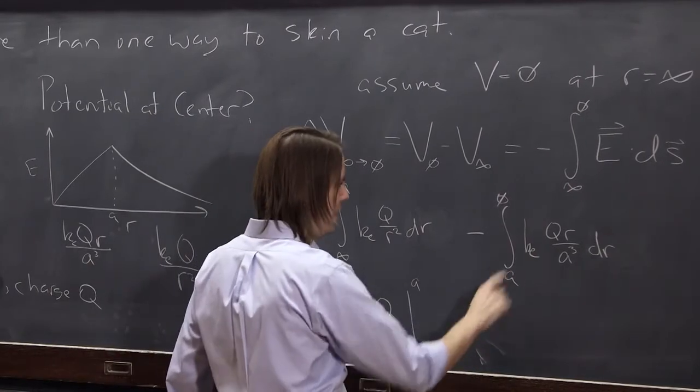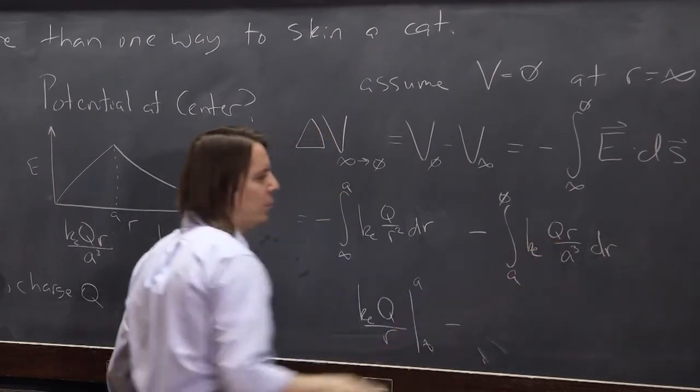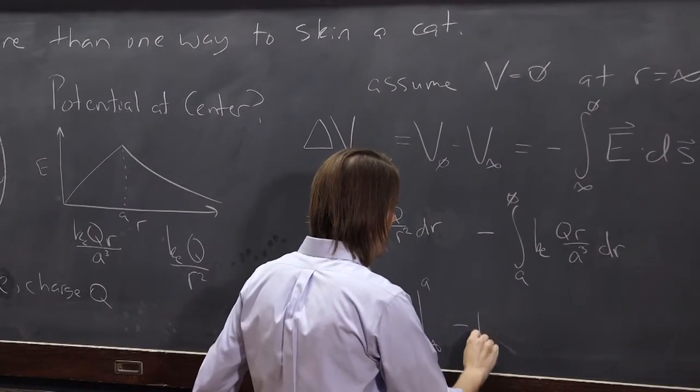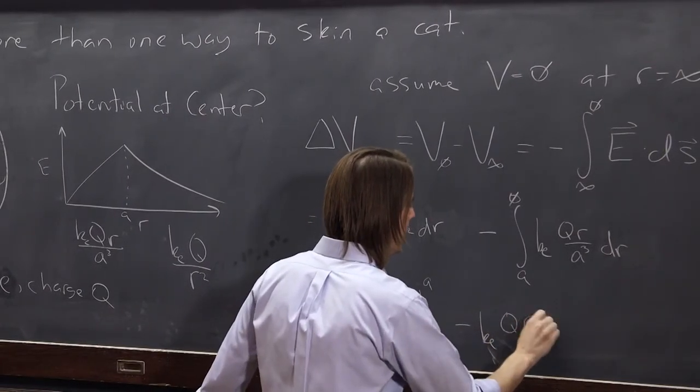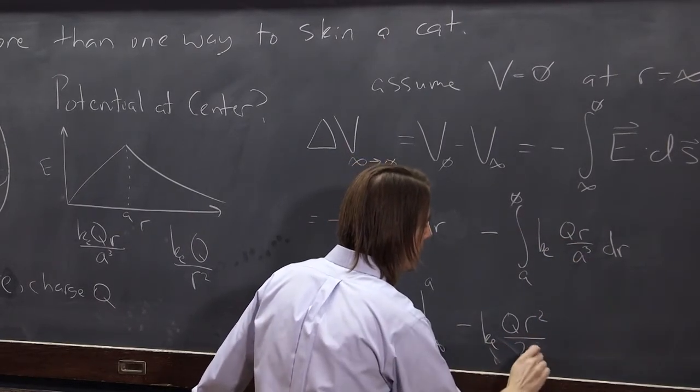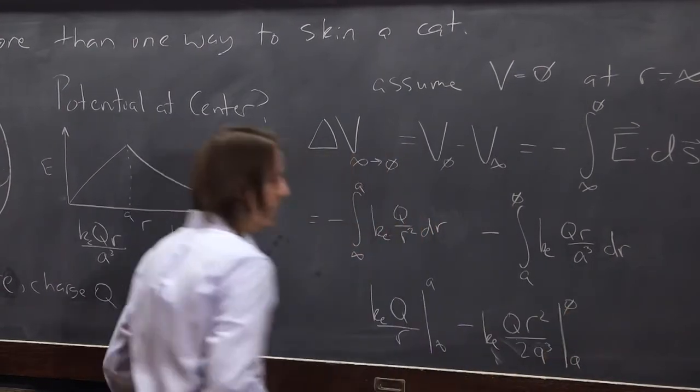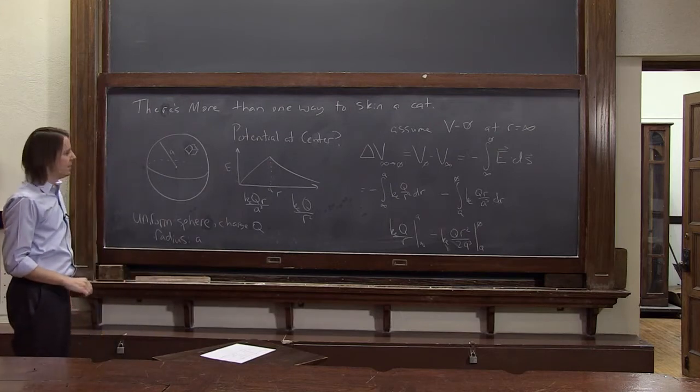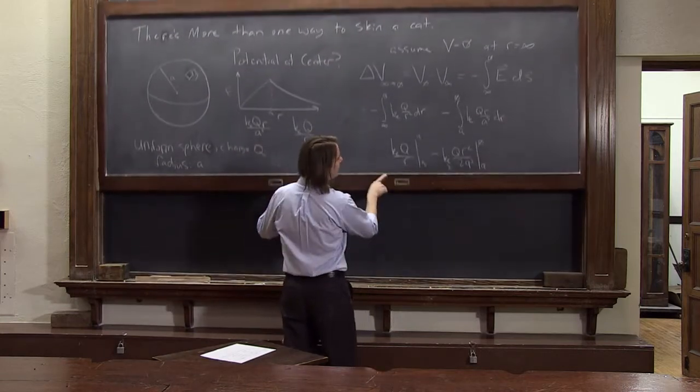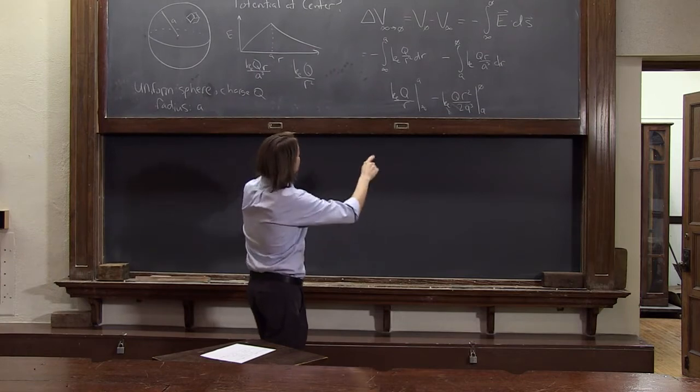This one is R, so it becomes, the minus stays, it becomes minus one half R squared when you just integrate R. So minus KEQ R squared, and then the one half makes it a two A cubed, evaluated from A to zero, like that. And now I've run out of board, so I'm going to pull this up. And we only need about one more line.